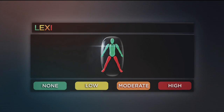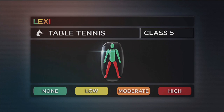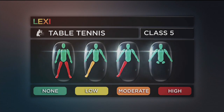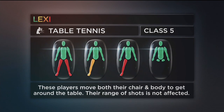Class 5 is for wheelchair players with a high degree of impairment affecting the legs, or the loss of limbs. These players move both their chair and body to get around the table. Their range of shots is not affected.